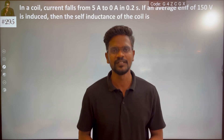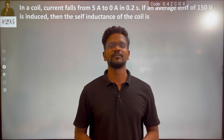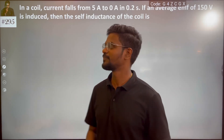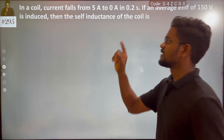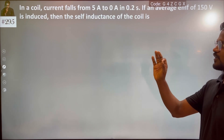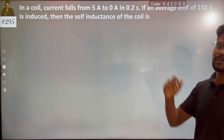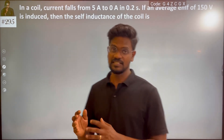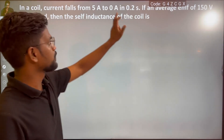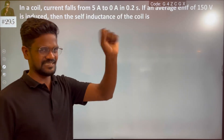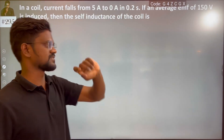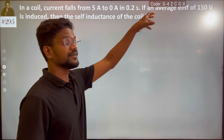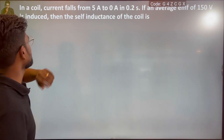Hi everyone. If you want to talk about this simple problem: current falls from 5A to 0A, that is 0 in 0.2 seconds. If the average EMF is 150V, then we need to find the self-inductance of the coil.